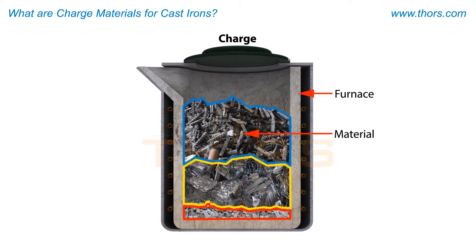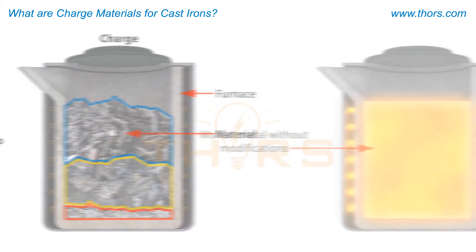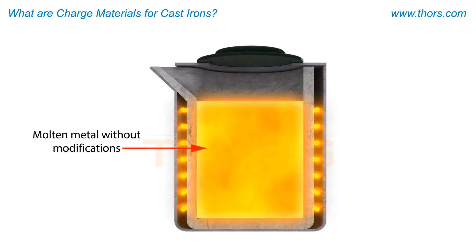The proportion of charge materials required to achieve a specific chemistry is known as the charge make-up. Molten metal in the furnace prior to any modifications may be referred to as the base melt.